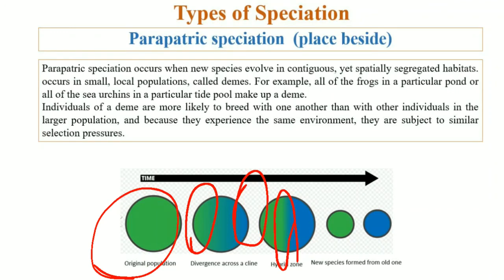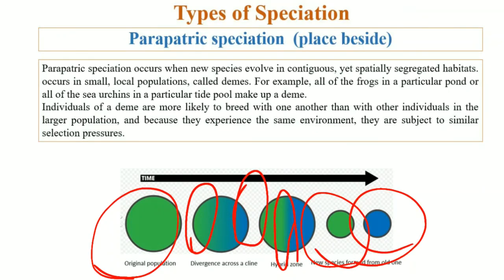Eventually, one population splits into two new species. This is what we call parapatric speciation.